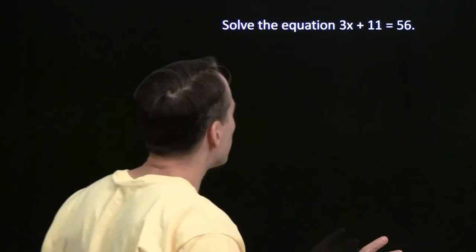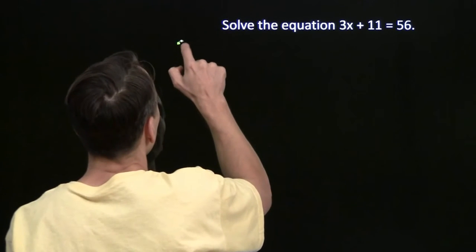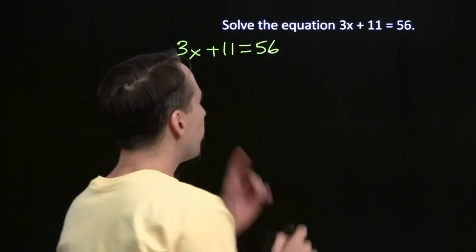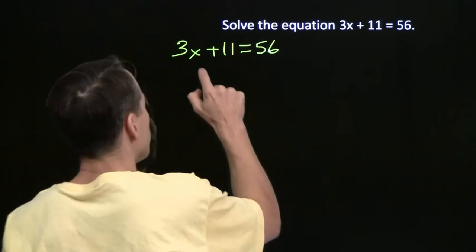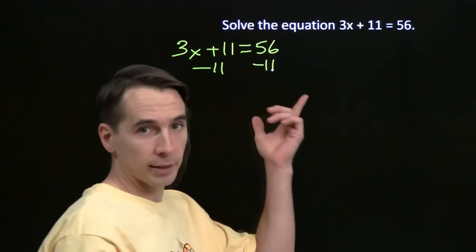Well, let's just try it both ways and see which one we like better. We'll start off by getting rid of the 11 first. When we get rid of the 11, we start off with 3x plus 11 equals 56. And we can get rid of the 11 from this side of the equation by subtracting 11. Now, if you subtract 11 on the left, you have to subtract 11 on the right. Can't play favorites.